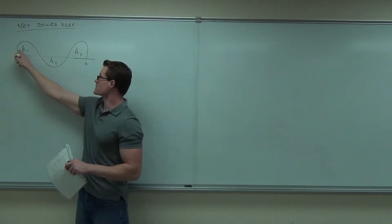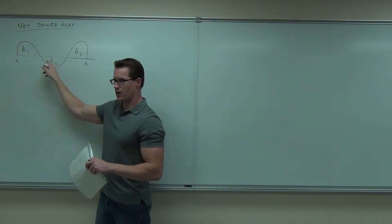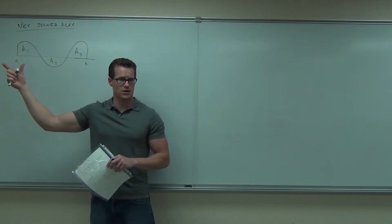It is including this as being positive, this as being positive, and this, it would count as a negative area. It would subtract from the two positive areas. Are you following me on that?